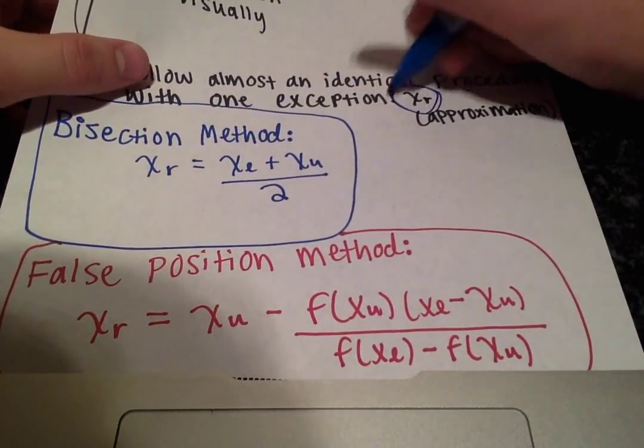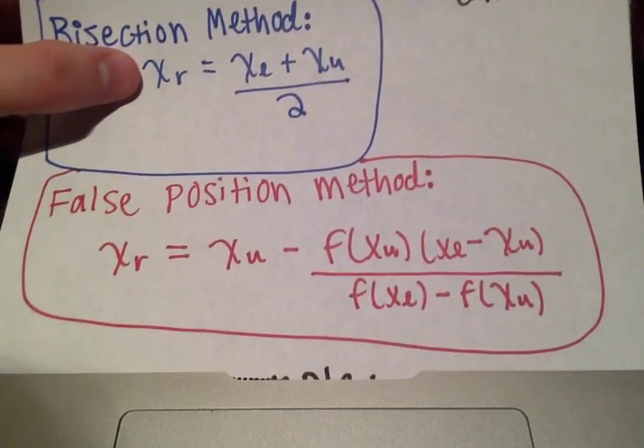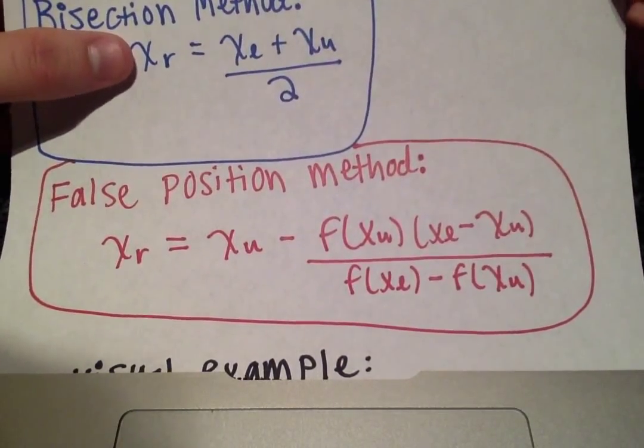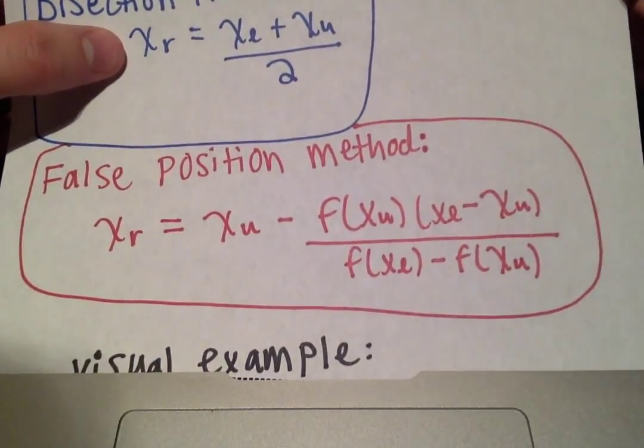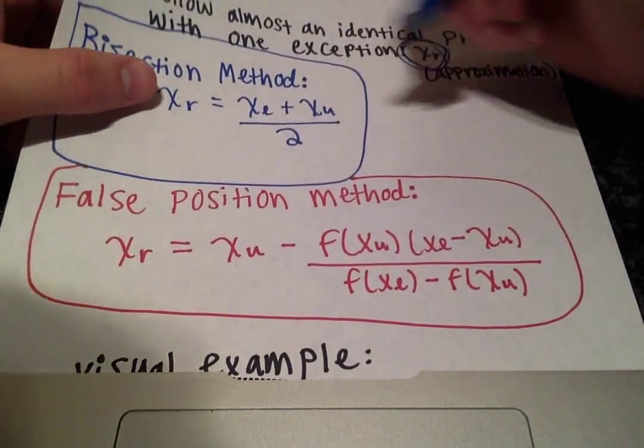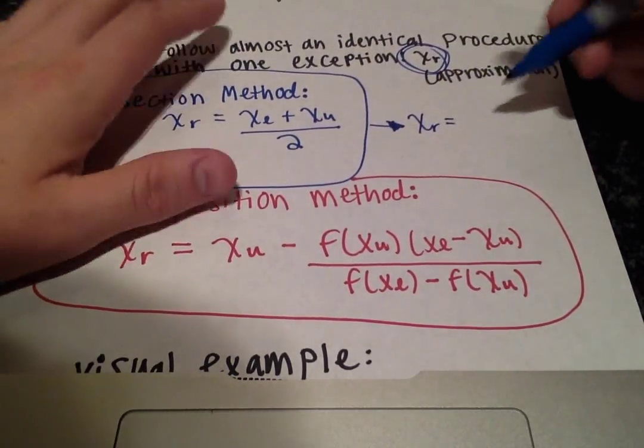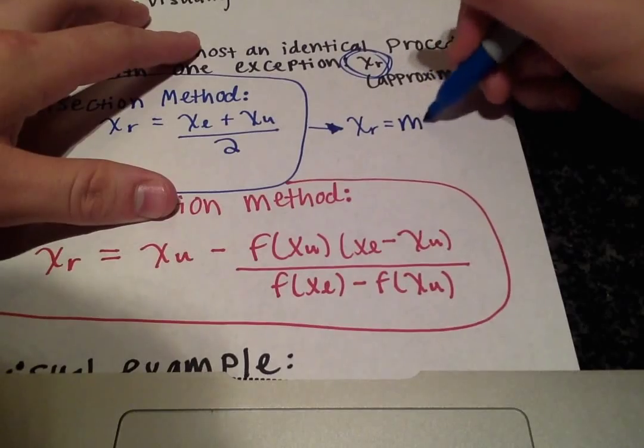So x_r is, in terms of calculation, the only difference is how x_r is calculated. So for the bisection method x_r is equal to x of l plus x of u divided by 2, and this makes x_r the midpoint.